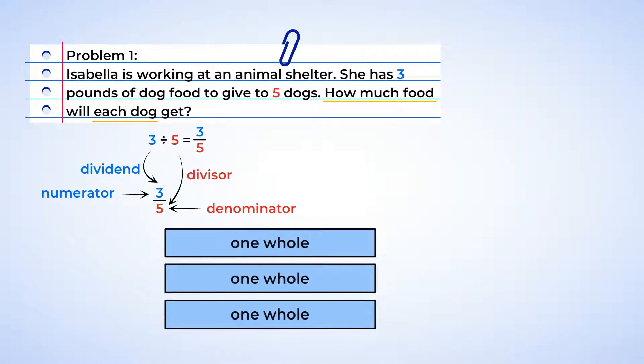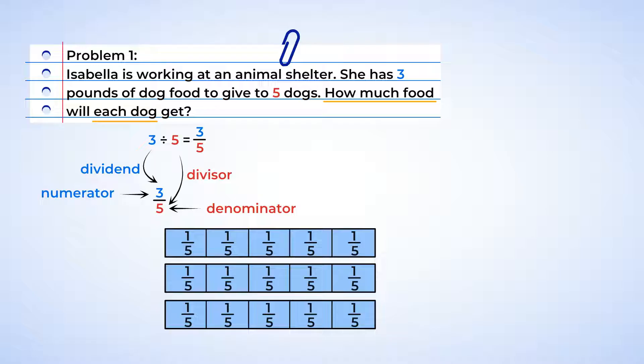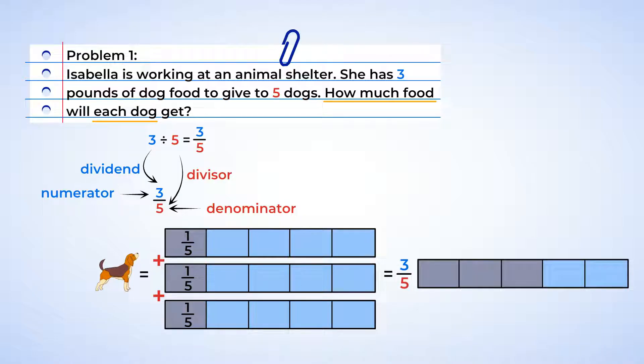Here we have three whole pounds of dog food. And each whole pound has been divided into five parts, five parts because there are five dogs. Each dog will get one-fifth of each whole, making a total of three-fifths of a pound of dog food for each dog. As we write the division problem as a fraction, we already get to the answer of three-fifths. Great work!